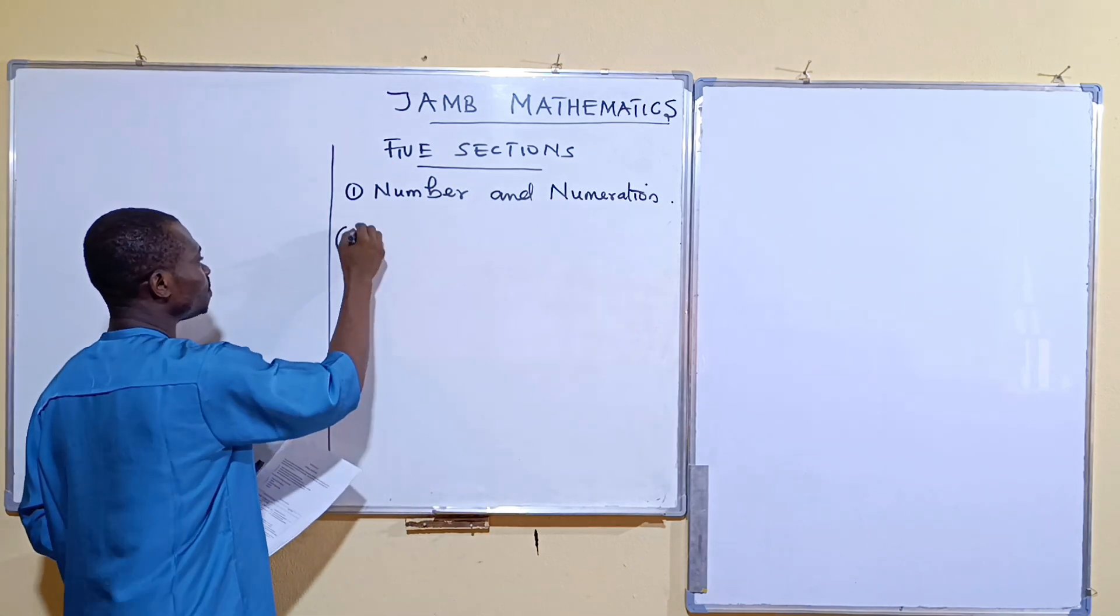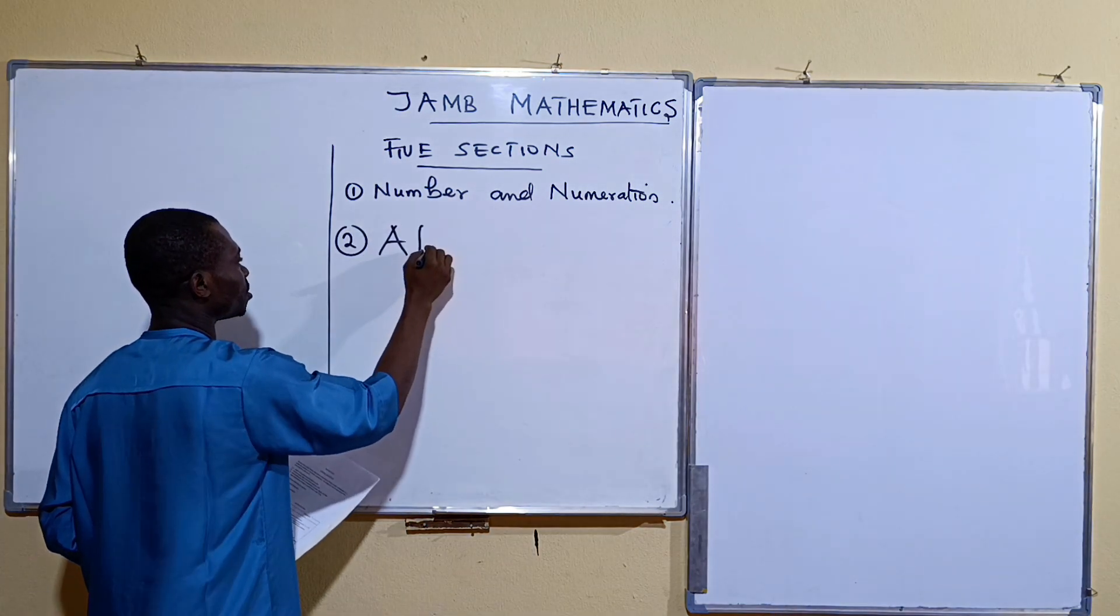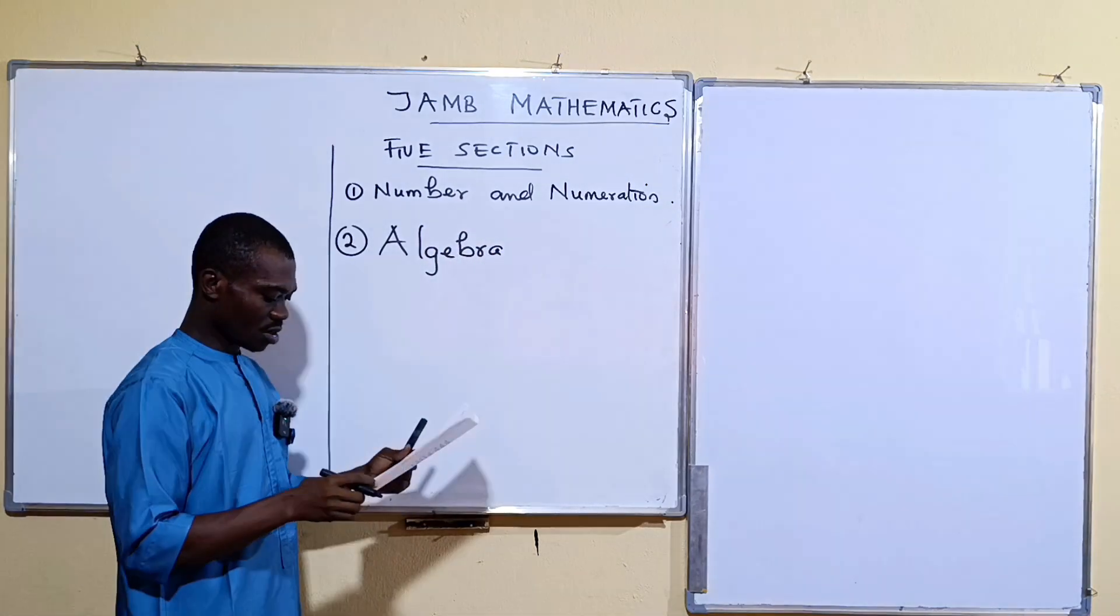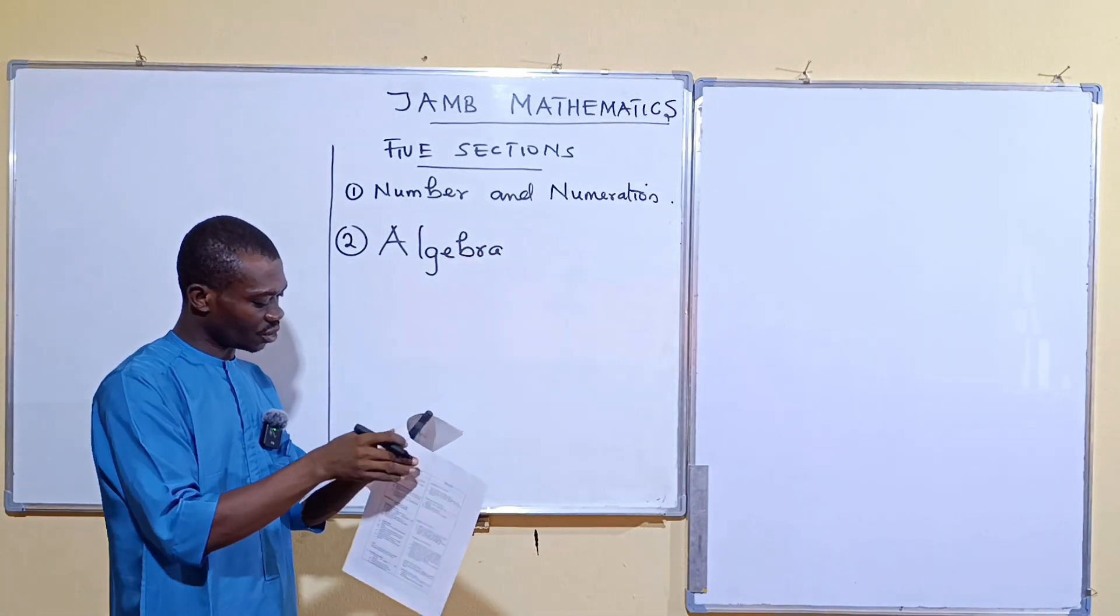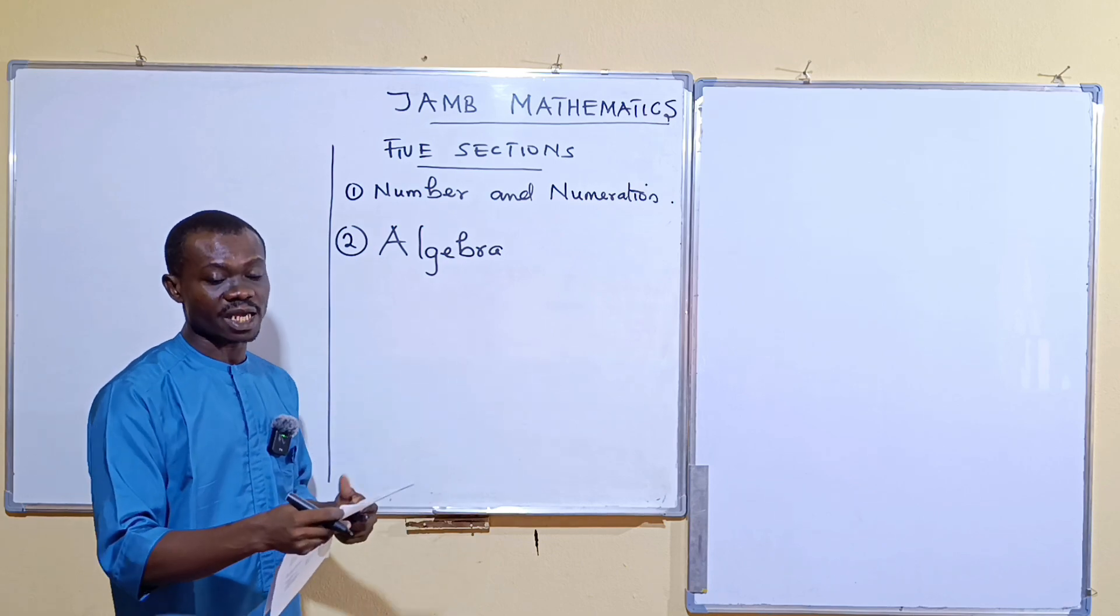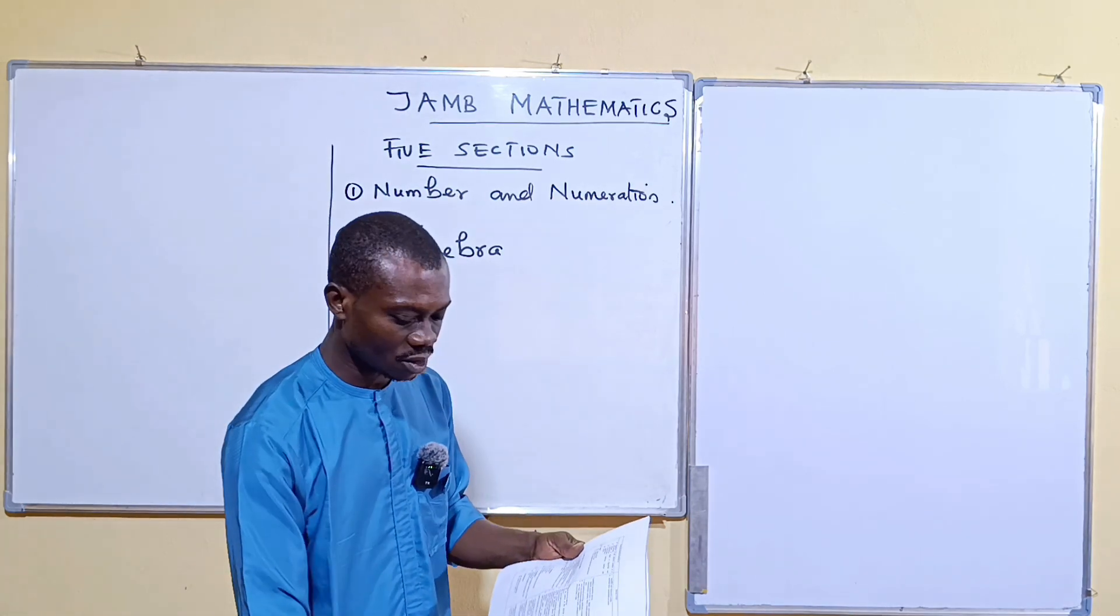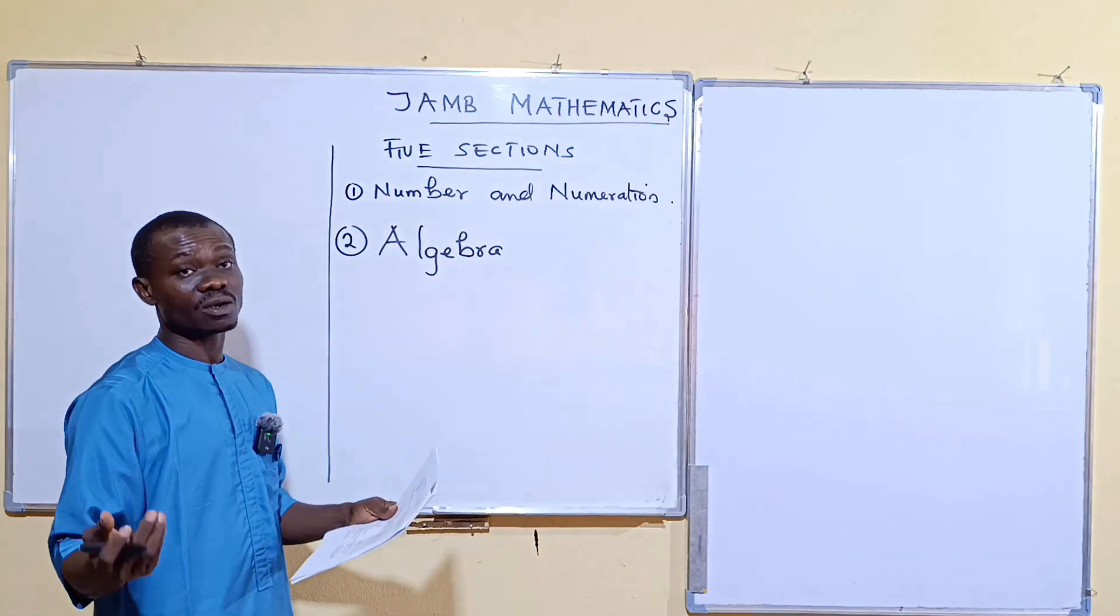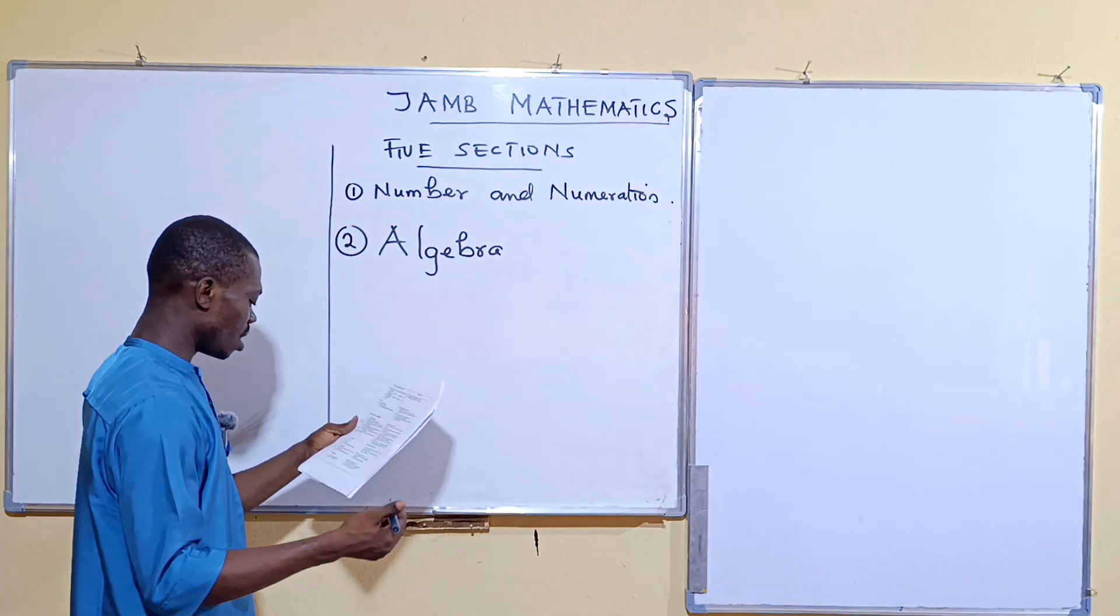So the second section is the algebra section. So the algebra section is the second. I will mention just a few of the topics. So the first one here is polynomials. So you know polynomials, then you have variations, you have inequalities and the rest.